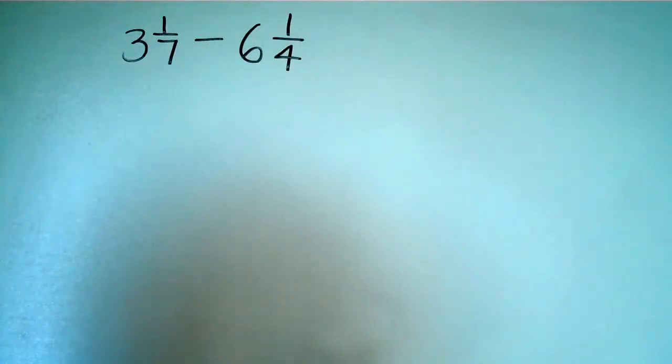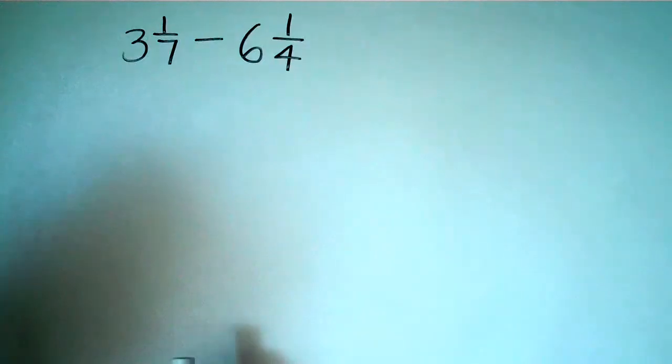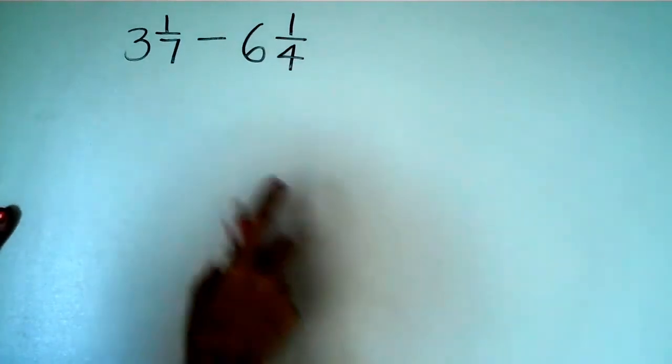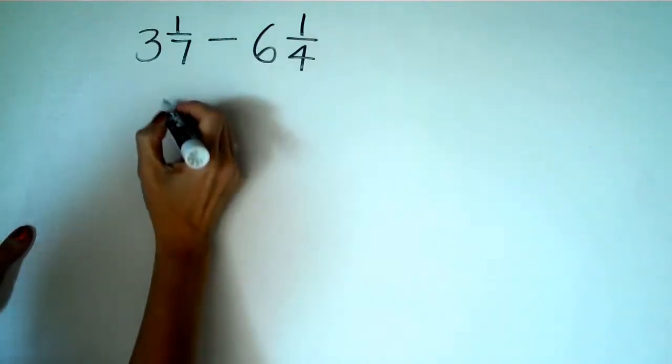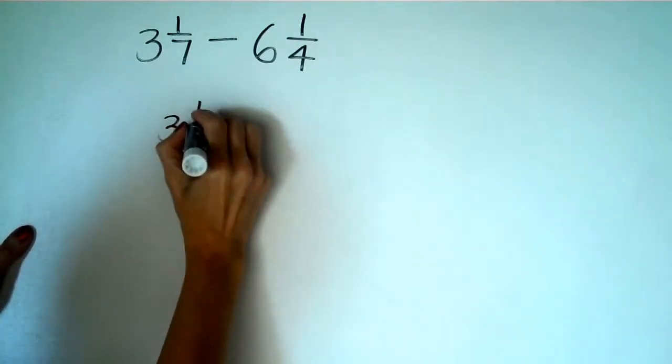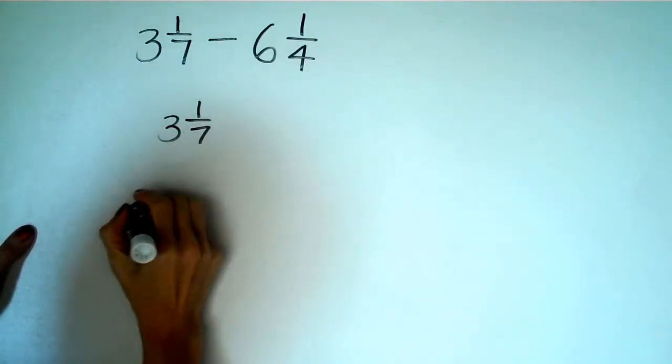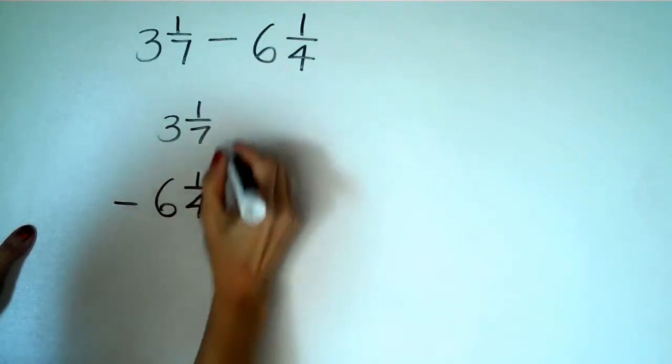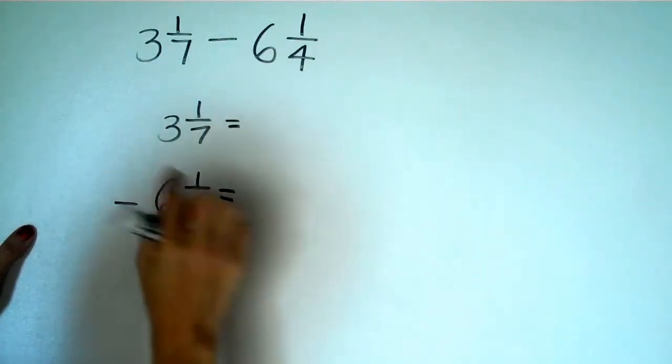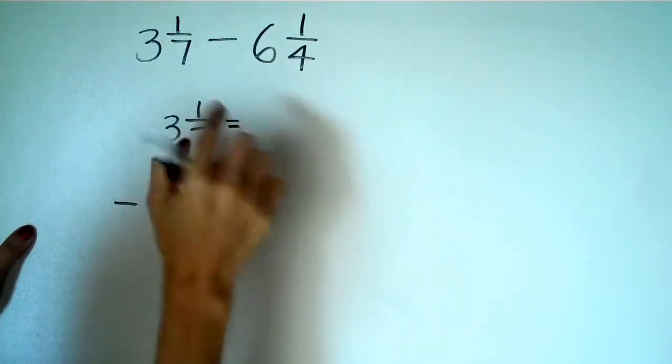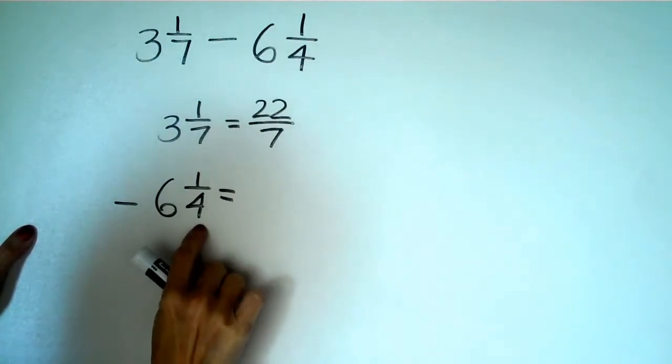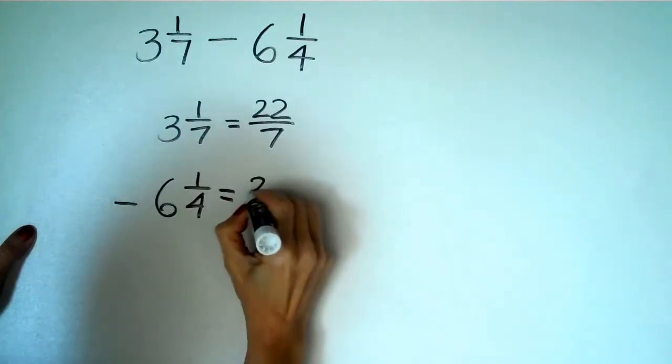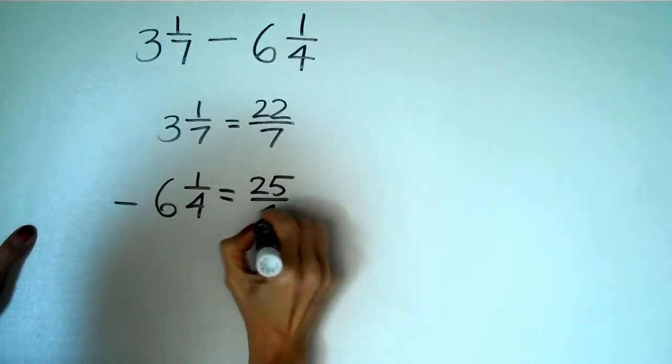So let's do one last example. Straightforward subtraction of two mixed numbers. So again, I'm going to take care of this by rewriting it vertically, minus six and one fourth. First thing I'm going to do, three times seven is twenty-one plus one is twenty-two over seven. Six times four is twenty-four plus one is twenty-five over four.